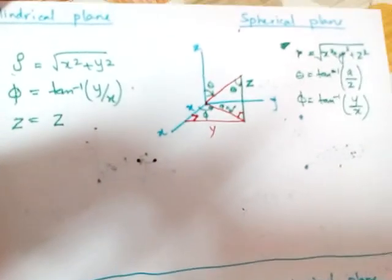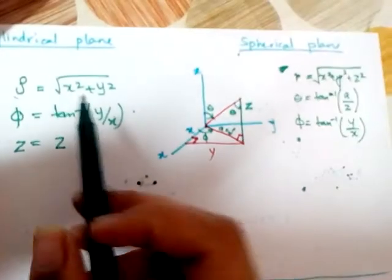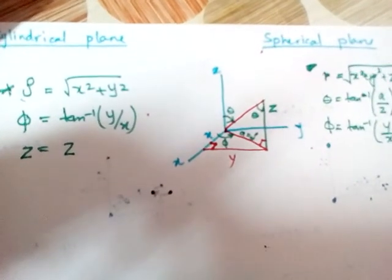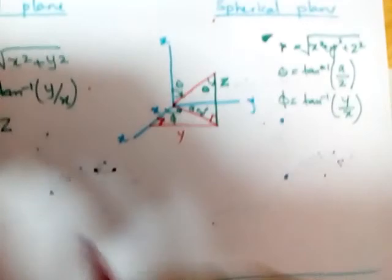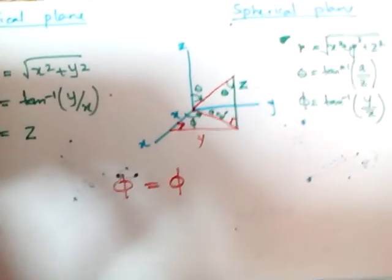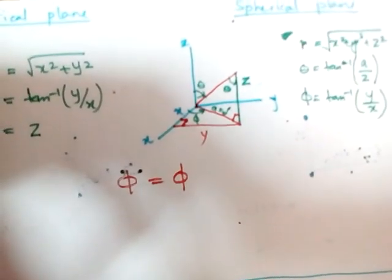Okay, so rho guys, rho remember it is under root x square plus y square. So let's start with phi because phi is equals to phi, so that's a very nice thing to write down. Z we are not using, so we don't need z for now.